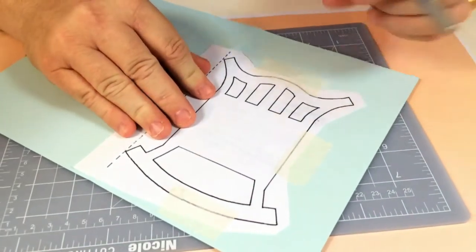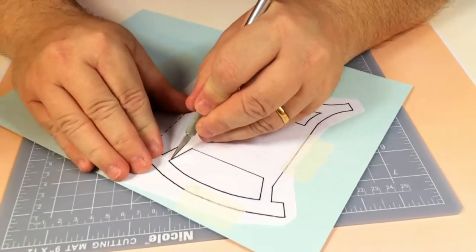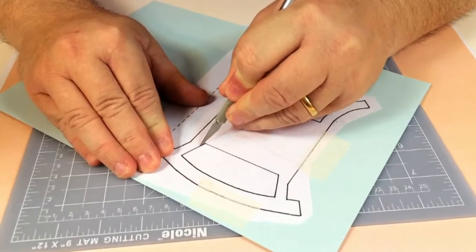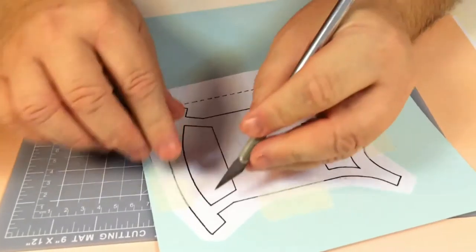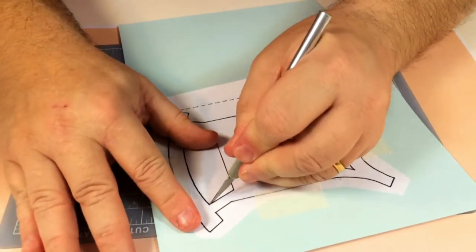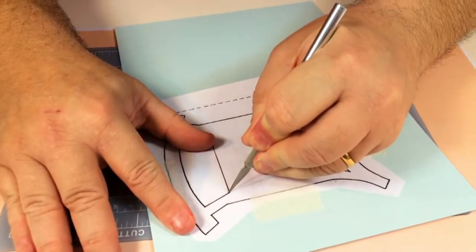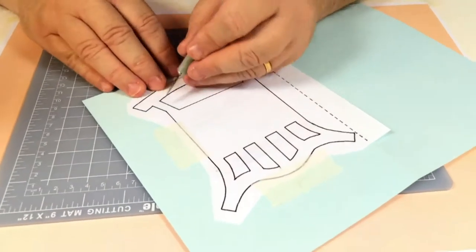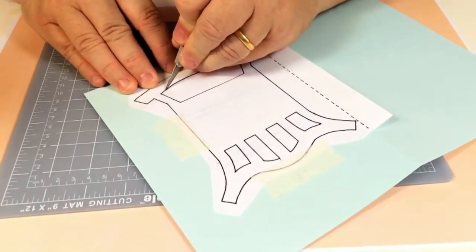Open this up and then you just cut out all these center bits first. Cut all these out. I'm not going to do all of them, I'm just showing you quickly.